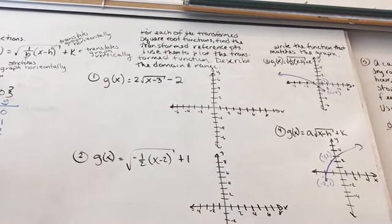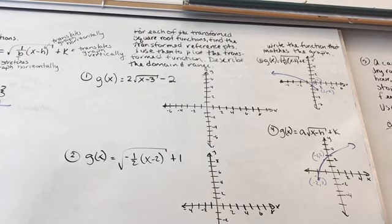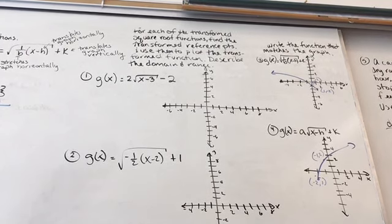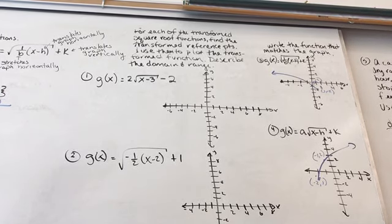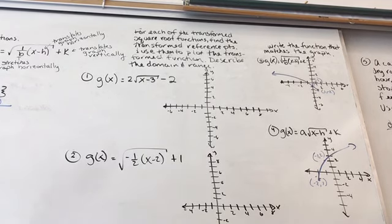We've got five examples to go through — a couple where we're graphing and a couple where we're writing the equation from the graph and going backwards. For each transformed square root function, find the transformed reference points, use them to plot the transformed function, and describe the domain and range. First, we need to identify what A, B, H, and K are doing.